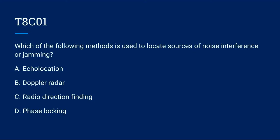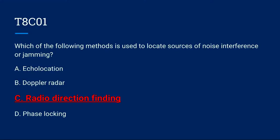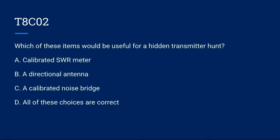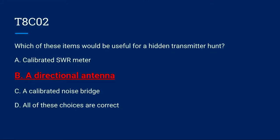T8C01: Which of the following methods is used to locate sources of noise interference or jamming? The correct answer is radio direction finding, using a directional antenna.